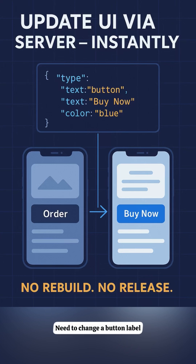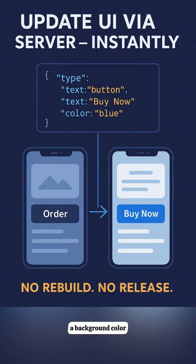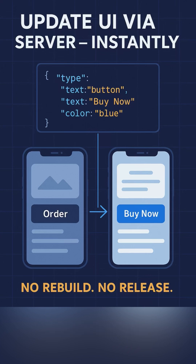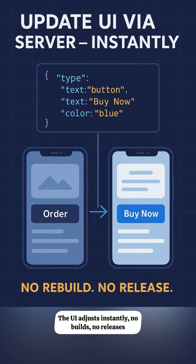Need to change a button label, a background color, an entire screen layout? You don't touch the app code — you just update the server config. The UI adjusts instantly, no builds, no releases.